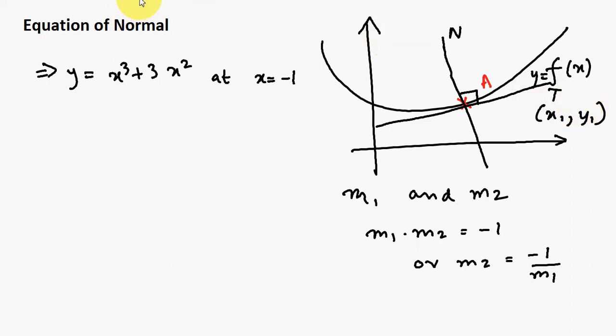So basically, if we can find the slope of the tangent over here, we can easily work out what is the slope of the normal, and we know that normal passes through the same point, so we can find out the equation of the normal. We start looking at an example. Over here, instead of this general f(x), the equation of my normal is given by y equals x³ plus 3x² at x equals minus 1.